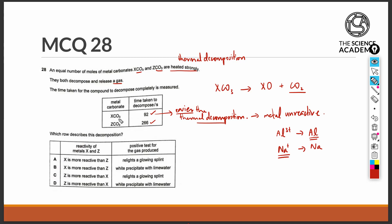So for XCO3, 92 seconds is taken to decompose it into XO, the oxide of metal X, and carbon dioxide. This means that it was relatively easy to decompose it since the time taken was shorter, which means X must have been not so reactive.